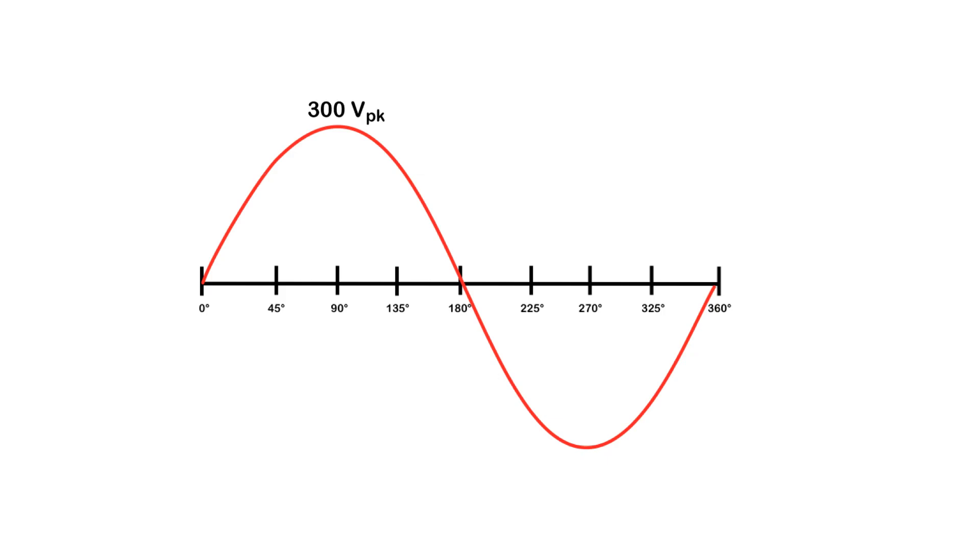So as an example here, let's say I have a 300-volt peak for this sine wave here, which would mean I'd have a 300-volt peak on the negative as well. So it's the same idea. It would just be negative 300-volt peak.